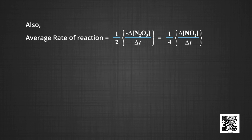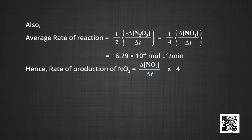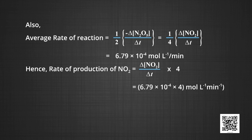Also, average rate of reaction equals (1/2) × minus delta[N2O5]/delta T equals (1/4) × delta[NO2]/delta T equals 6.79 × 10⁻⁴ mol/L/min. Hence, the rate of production of NO2 equals delta[NO2]/delta T equals 6.79 × 10⁻⁴ × 4 equals 2.72 × 10⁻³ mol/L/min.